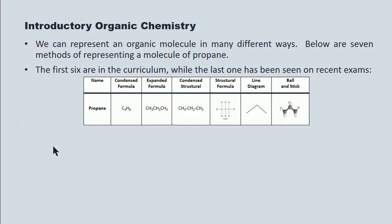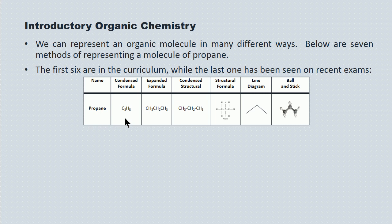So firstly, the name is propane. The condensed molecular formula, or simply the molecular formula, is C3H8. The expanded formula gives you a little more information. It shows you the carbon-to-carbon backbone of the molecule. Condensed structural expands that slightly, and it includes a line representing the covalent bonds between the carbons. The full structural, or the structural formula, shows you a line where there's a covalent bond between carbon-to-carbon or between carbon-to-hydrogen.